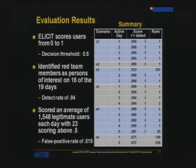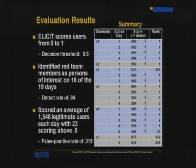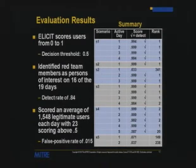In terms of results, we set the decision threshold at 0.5. There were 19 user-days of known malicious behavior from the red teams; we detected them above 0.5 on 16 of those days. During that same time, with about 1,500 active users, about 23 were also above the 0.5 level, giving us our false alarm rate. The table shows each scenario run over 1 to 5 days — not consecutive — with actual threat scores and threat rank. Many detections were at or near the very top of the list.